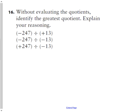Without evaluating the quotients, determine which one is going to be the greatest. So this is going to have a negative value, whatever it is. This is going to have a positive value, regardless of what the number is. And this will have a negative value. So without having to do any work, I know the greatest quotient will be negative 247 divided by negative 13.